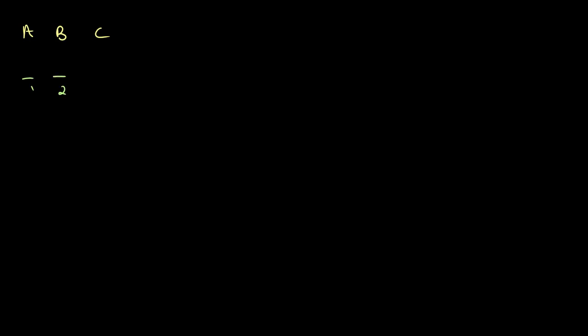Let's say for example that we have three people — person A, person B, and person C — and we also have three chairs: chair one, chair two, and chair three. What we want to do is find all of the different ways that persons A, B, and C can be arranged between the three chairs.